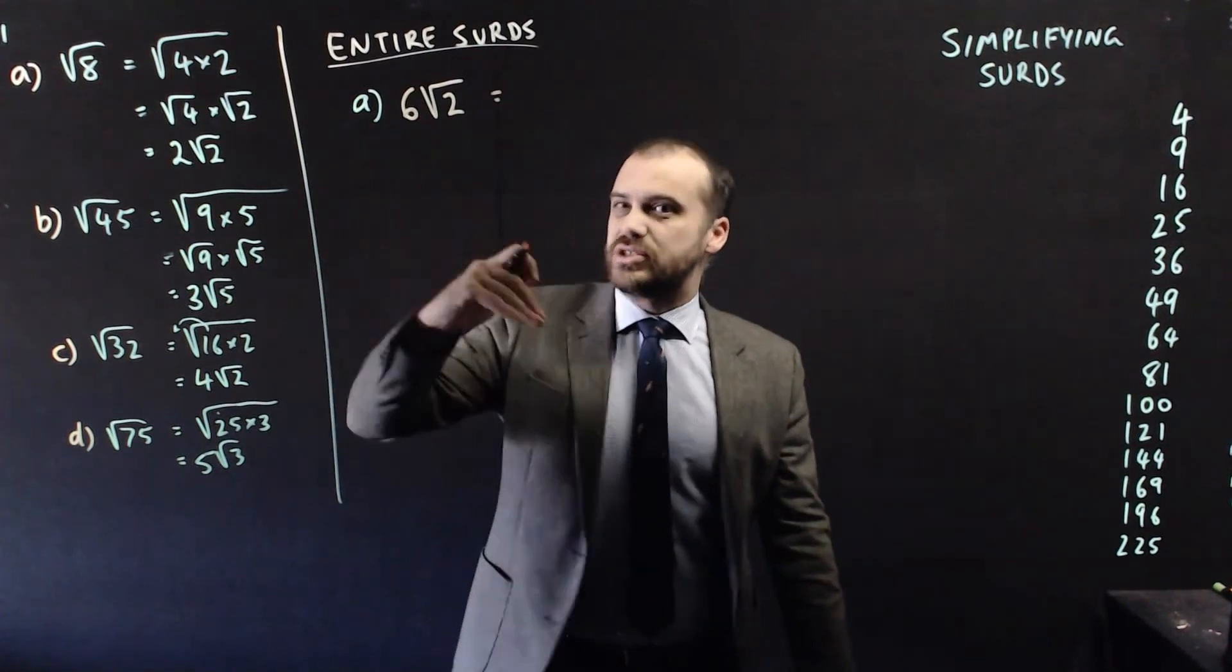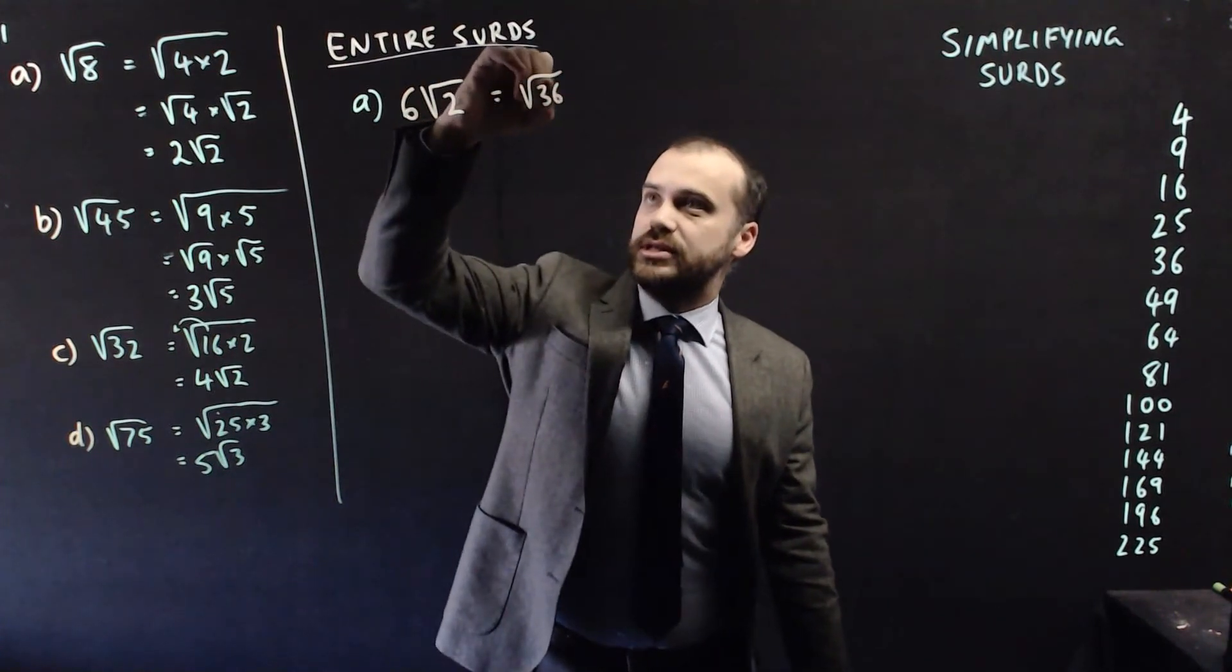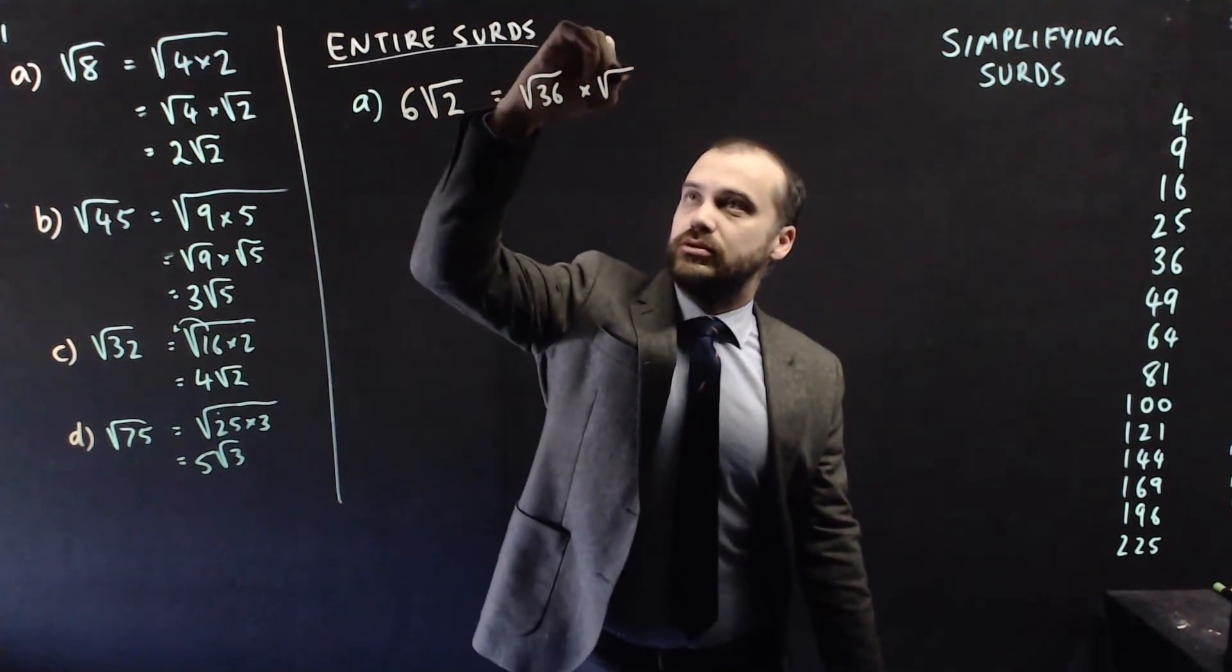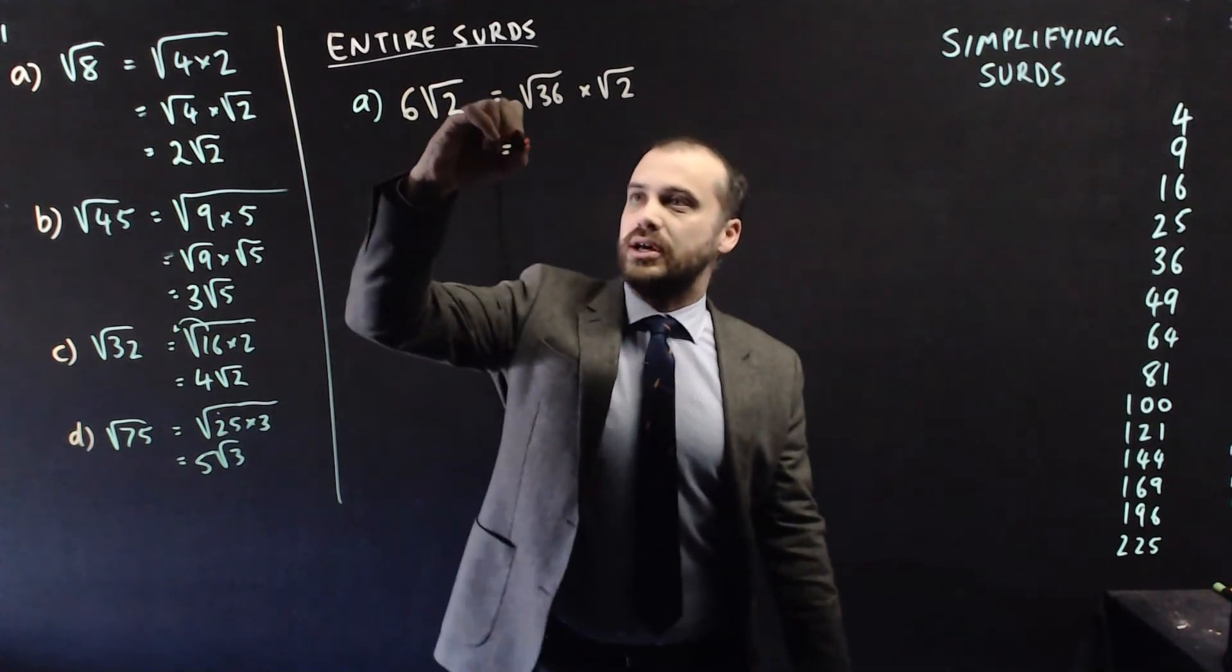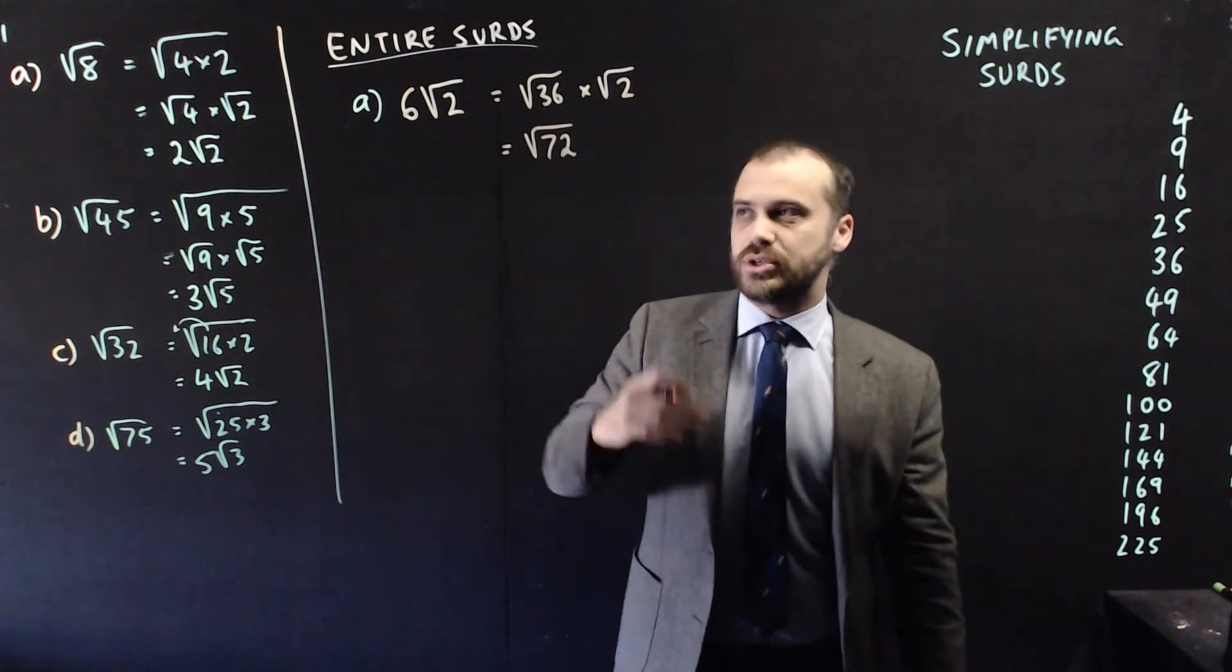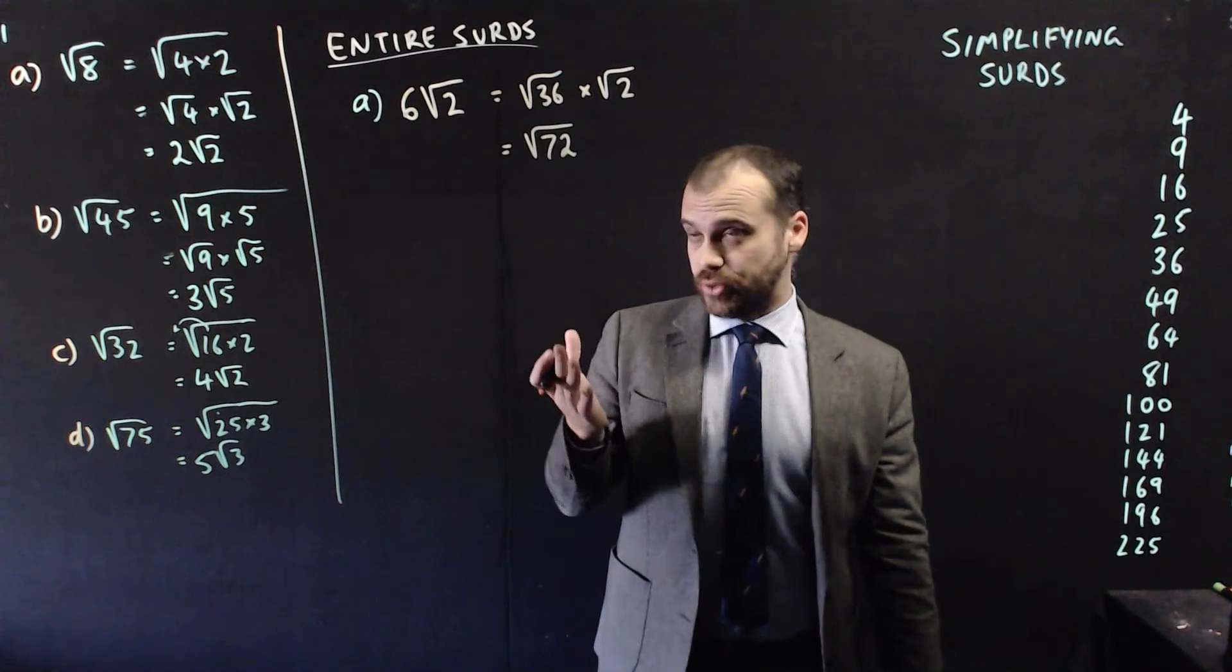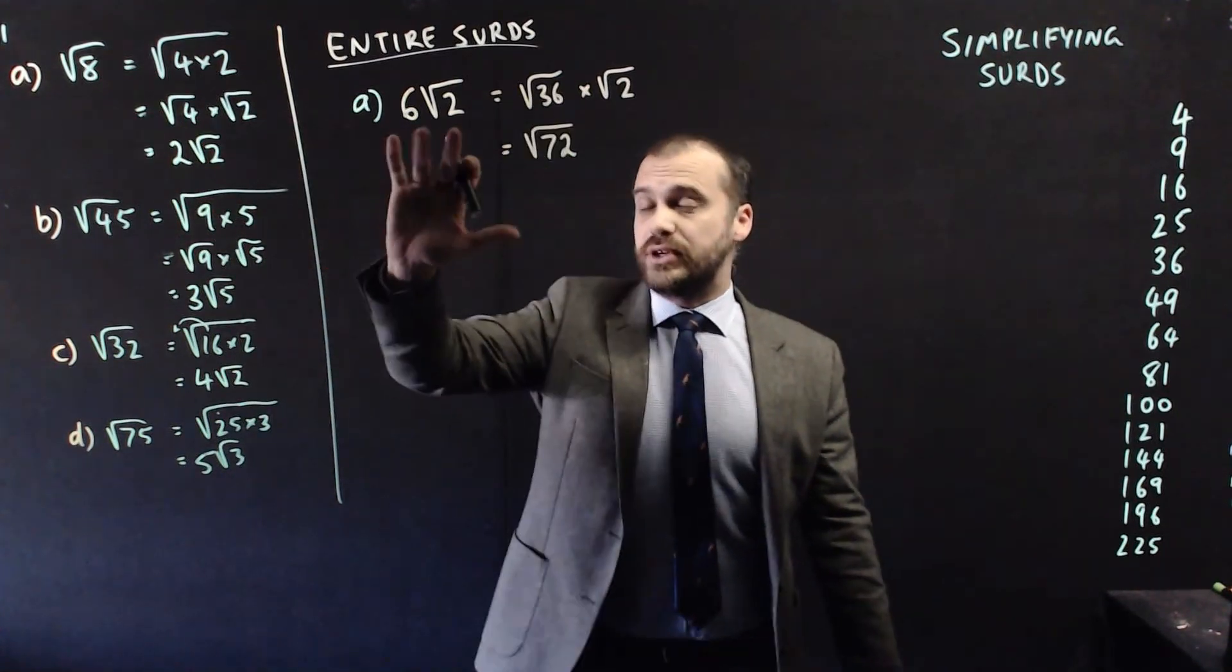We need to write it as two surds multiplied by each other. So 6 squared is 36, so root 36 is equivalent to the number 6 times root 2. And now we can merge those surds into a single surd and call it root 72. 36 times 2. Root 72 is the same as 6 root 2. Obviously you can check your work by just trying to do the whole thing backwards and seeing if you get back to there again.